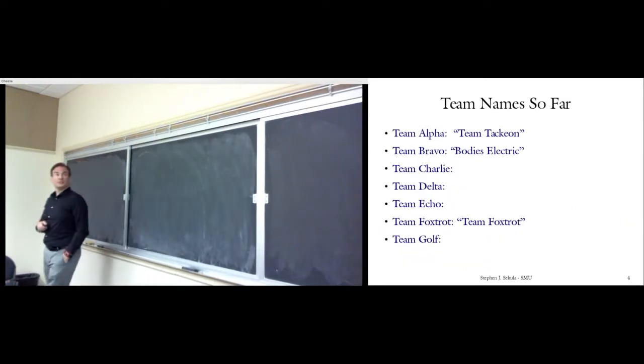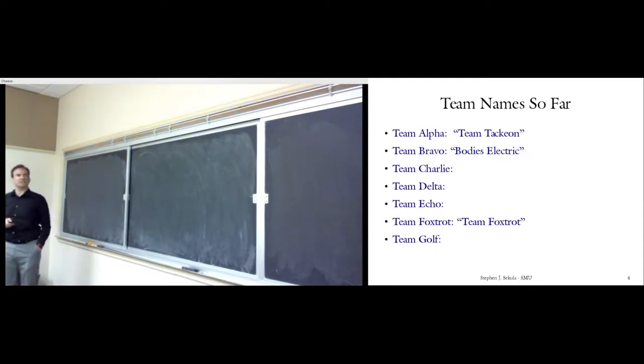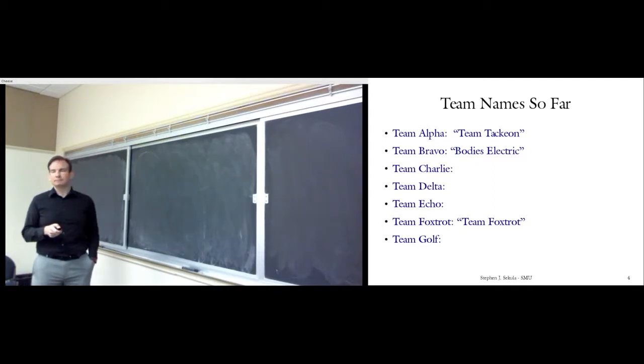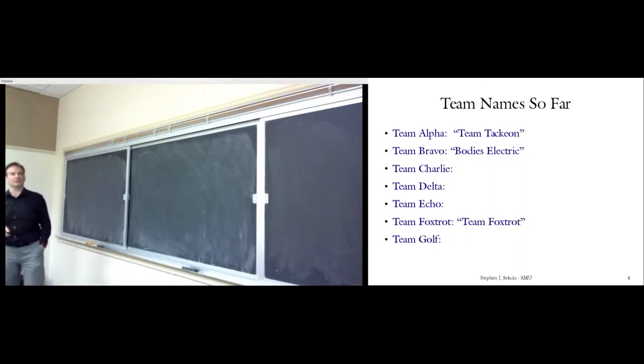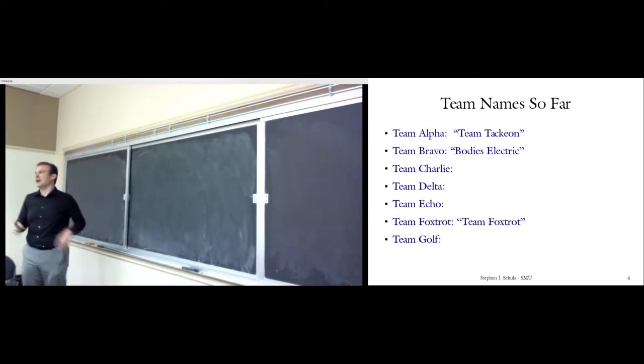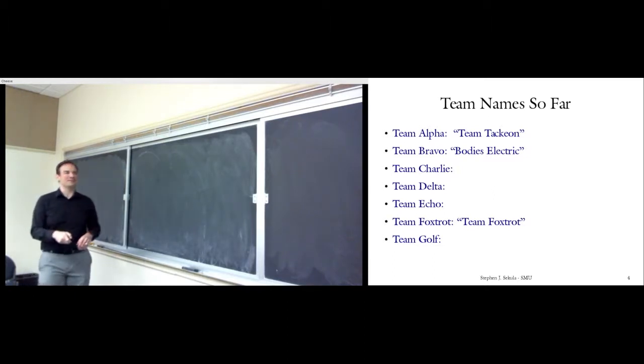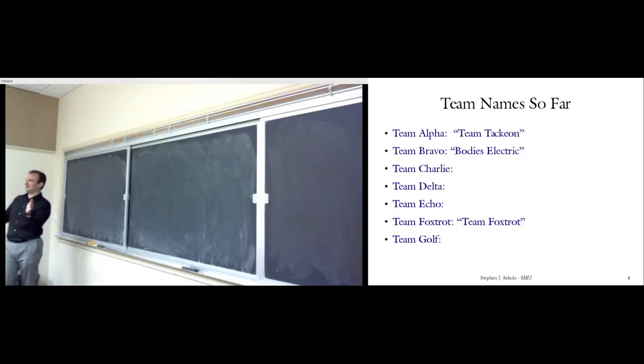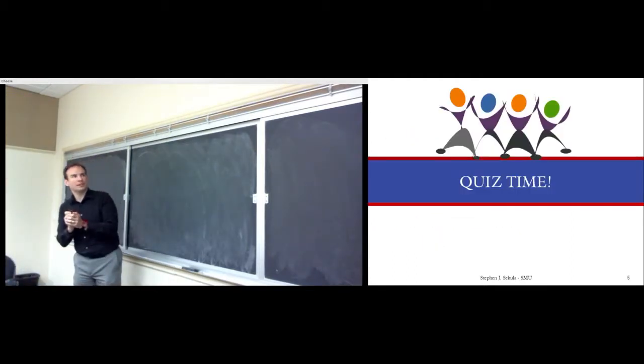Team names so far: Team Alpha is now Team Tachyon - I looked it up on urban dictionary, seems safe. Team Bravo is Body's Electric. Charlie, Delta, Echo, and Golf haven't decided yet. Team Foxtrot hedged - they'd like to be Team Foxtrot. Congratulations, you're named after a letter in the NATO phonetic alphabet. Charlie, Delta, Echo, Golf - by Friday I want to know what your team name is. You should at least be communicating by email. If you don't know how, contact me and I'll send the university email addresses for your team. Any questions? Otherwise, we've come to quiz time.